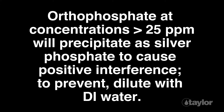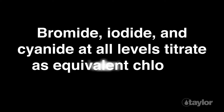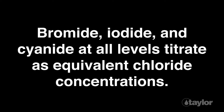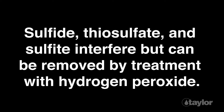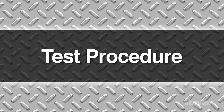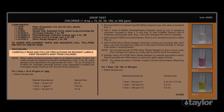To prevent interference, dilute samples containing more than 25 ppm orthophosphate with DI water. Bromide, iodide, and cyanide at all levels titrate as equivalent chloride concentrations. Sulfide, thiosulfate, and sulfite interfere but can be removed by treatment with hydrogen peroxide, which will be discussed later in this video.